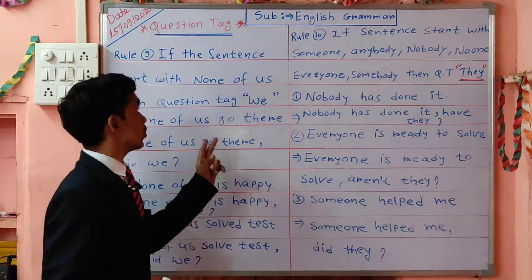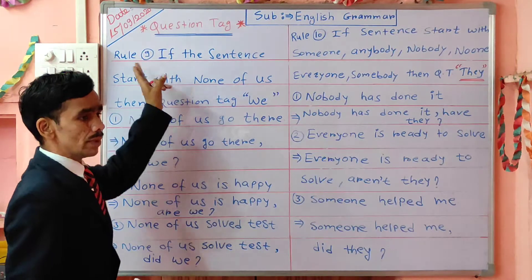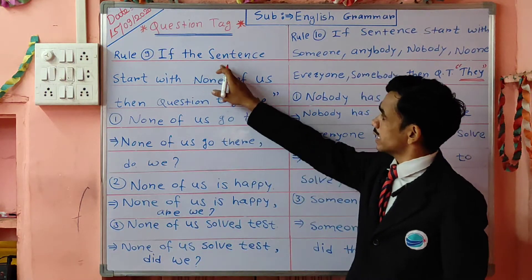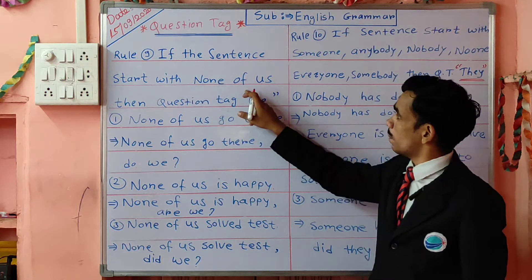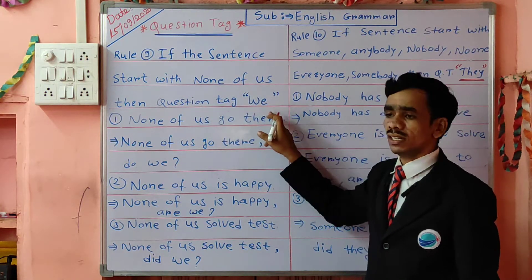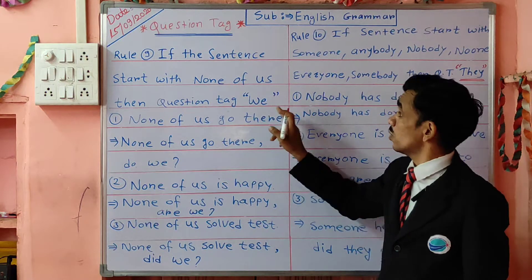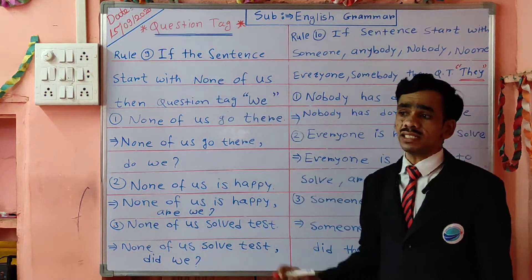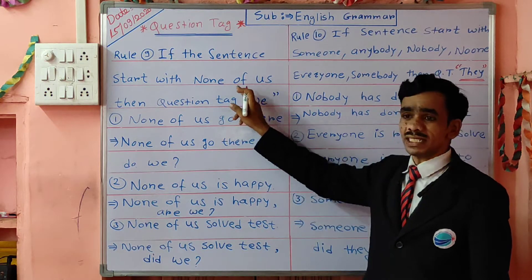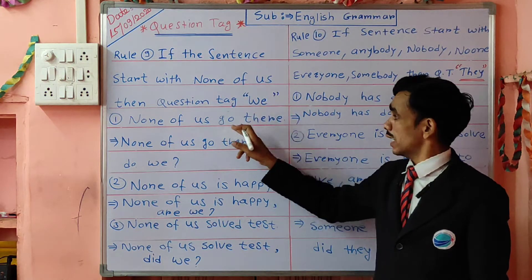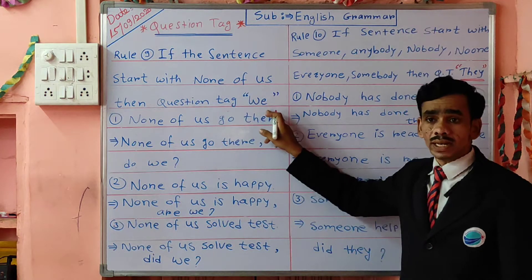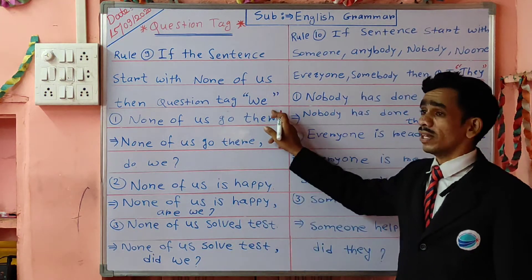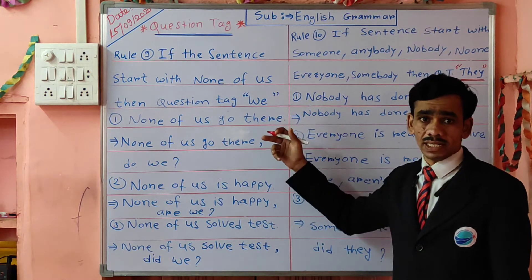Today we are going to see our next rule: rule number 9. Look at the board properly. Rule number 9: if the sentence starts with 'none of us,' then in the question tag we compulsory take 'we' at the end. The other rules remain as they are — check the tense and take the appropriate auxiliary verb accordingly.